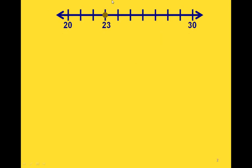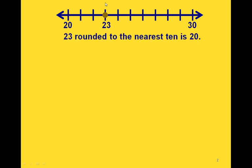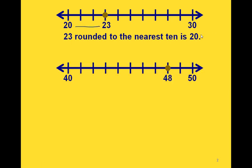For example, if we're rounding 23 to the nearest 10, we want to look at which value of 10 is the closest to it. The one that's closest to 23 is 20. If we want to round 48 to the nearest 10, we know it's between 40 and 50, but the one it's closest to is 50.